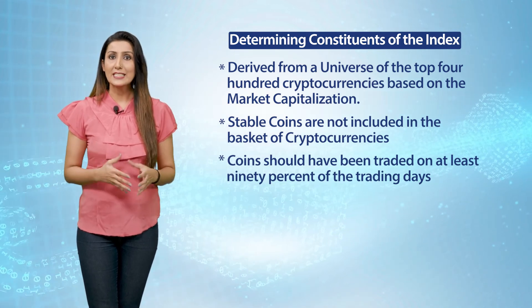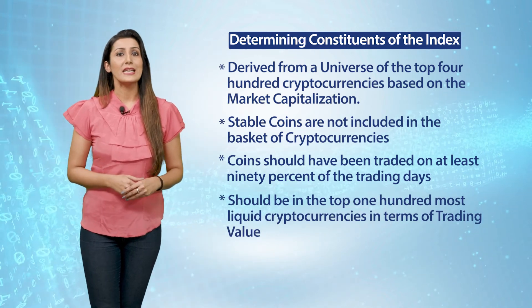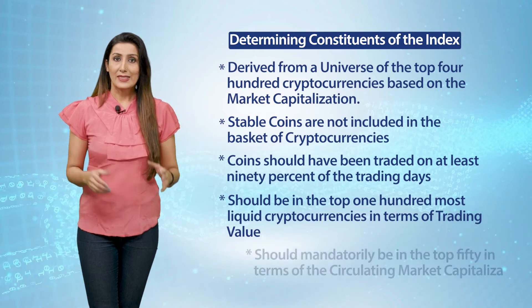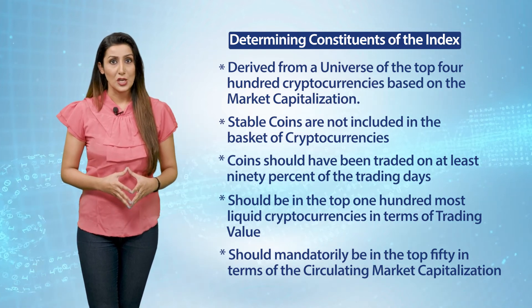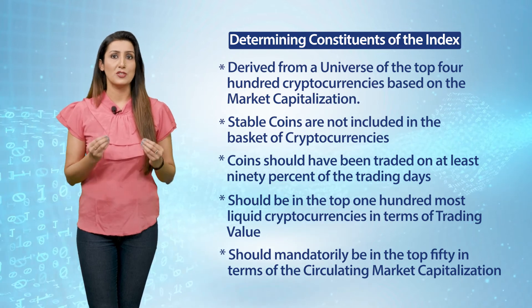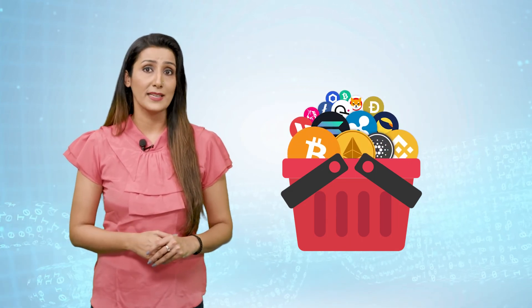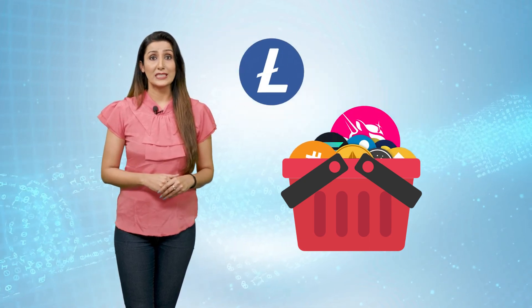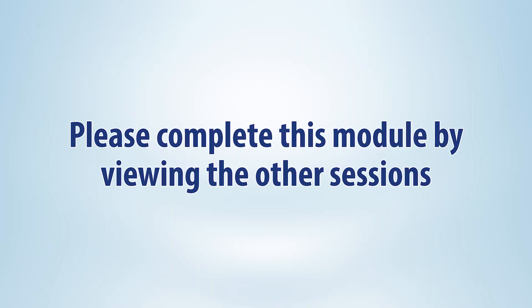Eligible index constituents should have been traded on at least 90–95% of trading days during the review period. They should also be in the top 100 most liquid cryptocurrencies in terms of trading value during the preceding month, and mandatorily in the top 50 in terms of circulating market capitalization during the preceding month. These criteria ensure it becomes a true barometer for market tracking. IC15 includes coins from the top 15 cryptocurrencies by circulating market capitalization that are eligible for the index, with a maximum of 15 constituents, and all constituent weightages determined by their circulating market capitalization.